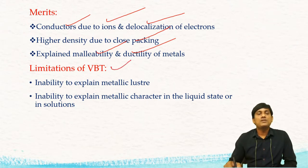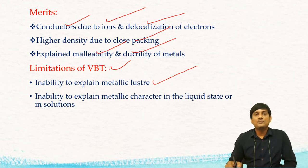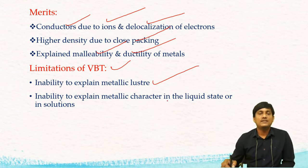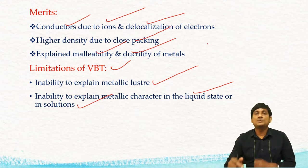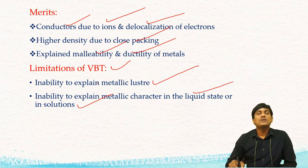But valency bond theory has certain limitations. It fails to explain metallic lustre — why metals are shiny or bright. It also has an inability to explain metallic character in the liquid state or in solution. When a solid metal is converted to liquid metal, there is a retention of metallic properties, and why this retention occurs is not explained by valency bond theory.